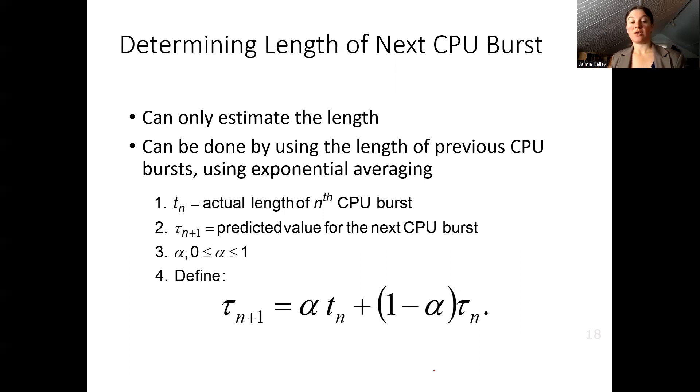In this case, we are using alpha to represent what percentage or weight we are taking from the actual length, and then we'll take the rest of it from the predicted value. This value for alpha has to be between 0 and 1.